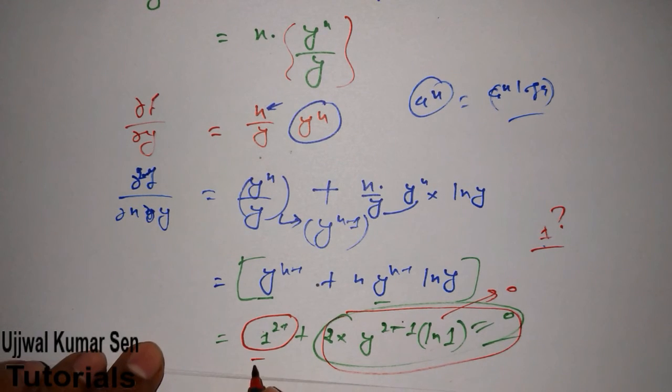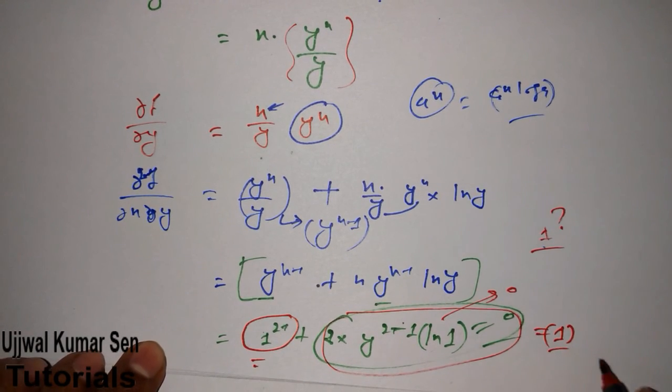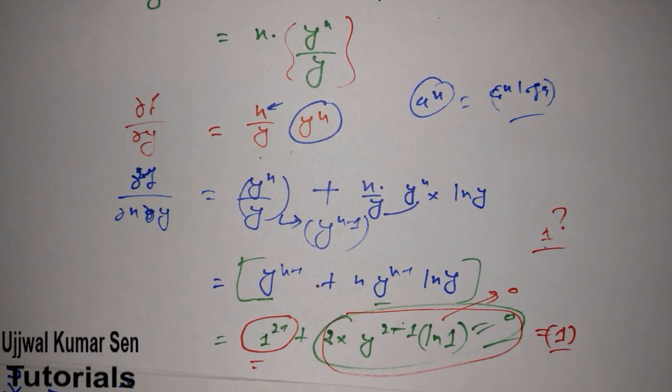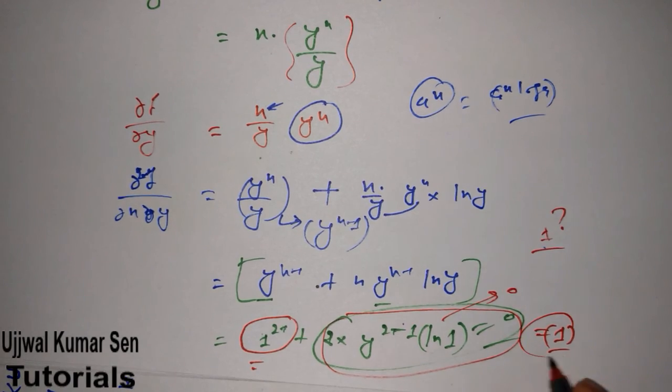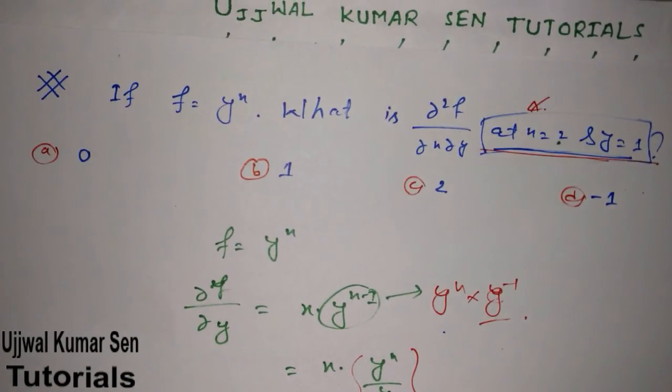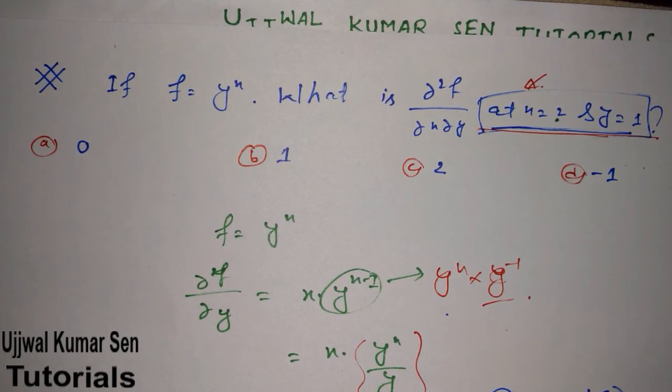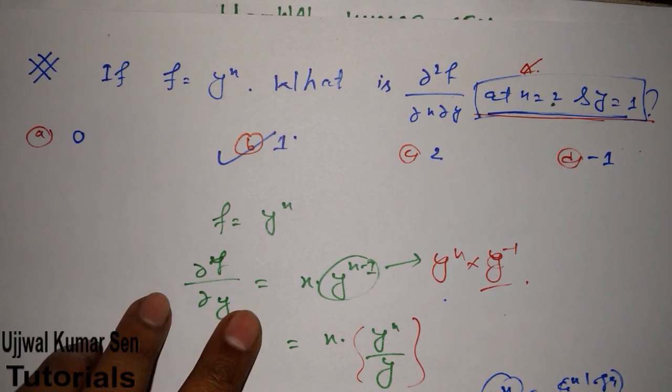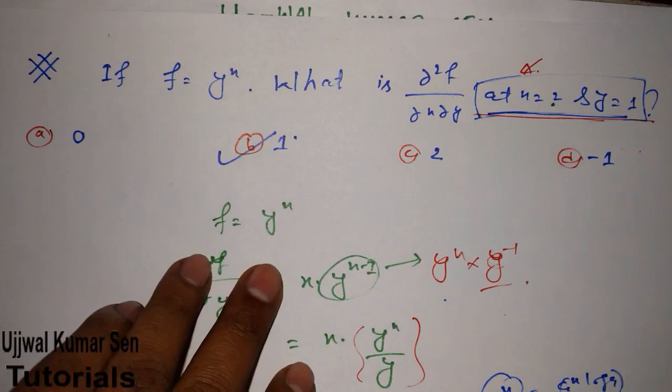1 to the power of anything, maybe 0 or 5000, will become 1. So what is the answer for this question? It's 1. Looking at the options: 0, 1, 2, -1. Option B is the right option.